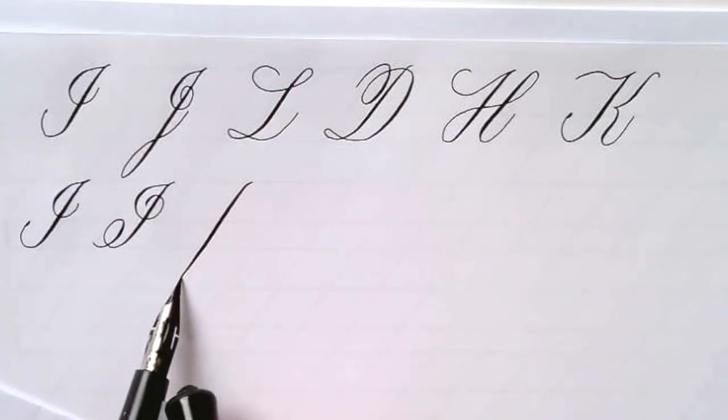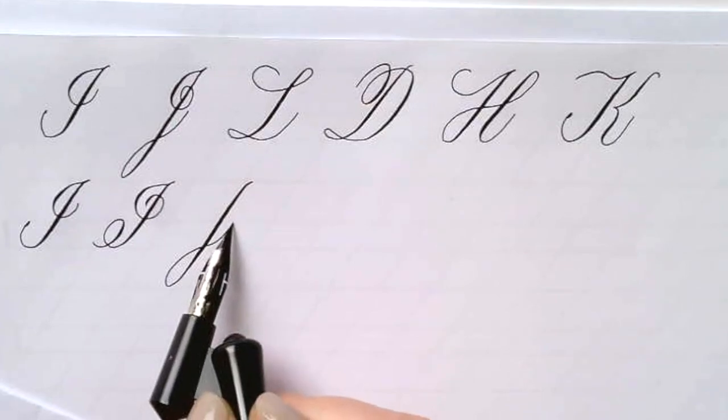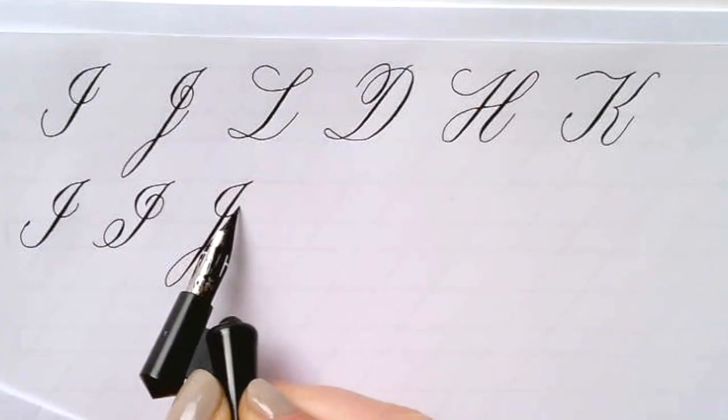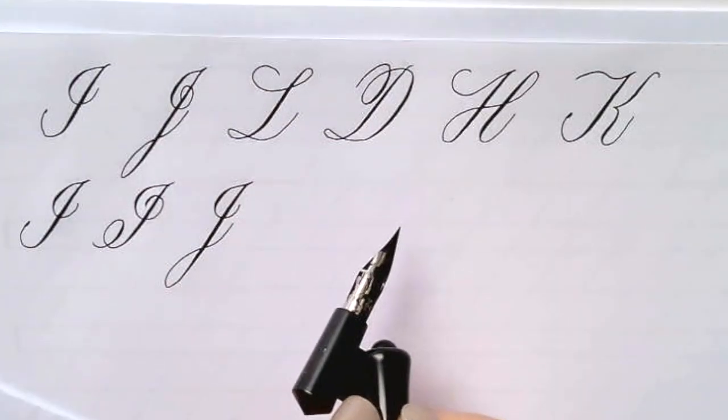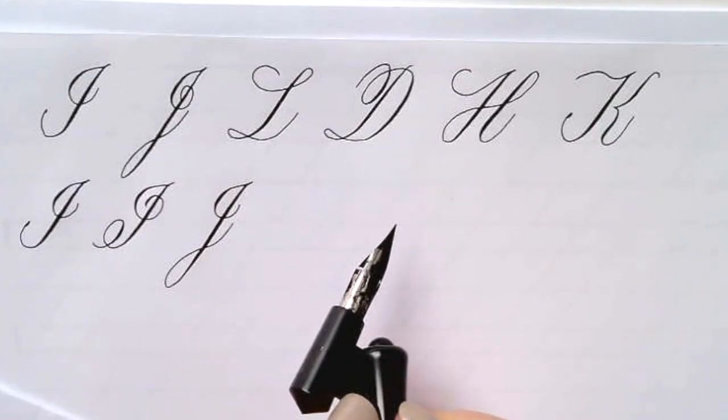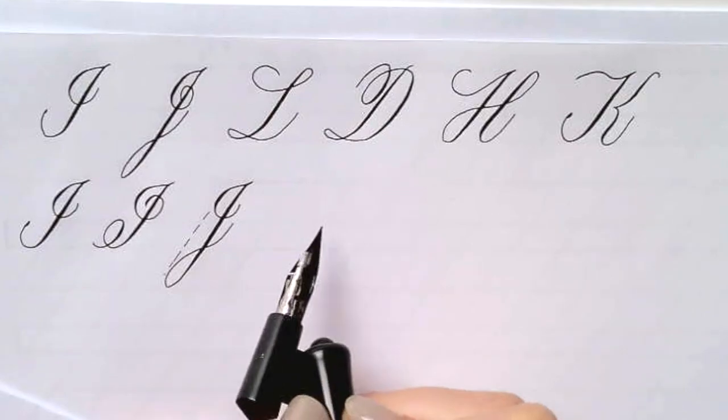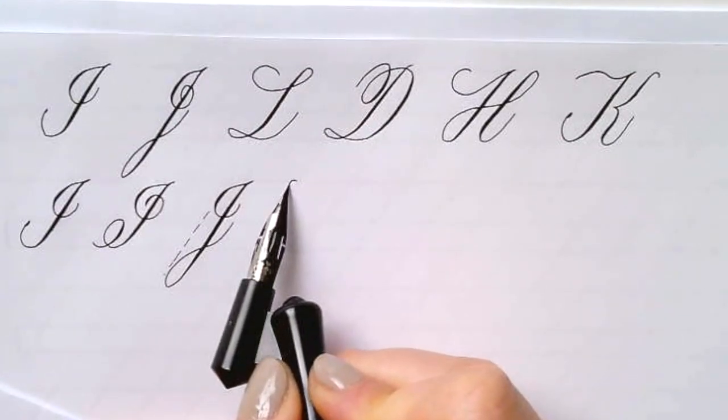The J again, a very long stroke, a dynamic stem that comes down below the baseline in an underturn loop coming up lightly and crossing at the baseline. Then you can add the same kind of loop as with the I, making sure that everything follows the slant line and is kind of boxed into that 55 degrees.